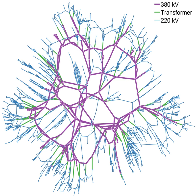The electric power which is generated is stepped up to a higher voltage at which it connects to the electric power transmission network. The bulk power transmission network will move the power long distances, sometimes across international boundaries, until it reaches its wholesale customer — usually the company that owns the local electric power distribution network.